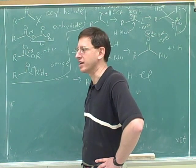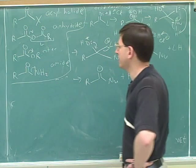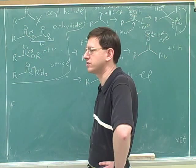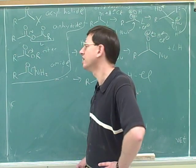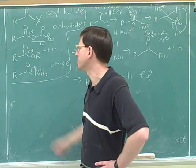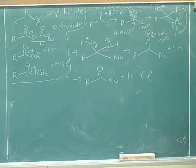A Claisen condensation is when you use an enolate as the nucleophile. Kind of like an aldol? That's right, just like an aldol. So just like an aldol condensation is just a regular nucleophilic attack on an aldehyde or ketone, it just uses a special nucleophile, an enolate. Well, the Claisen condensation is an example of this where we use the enolate to attack an ester group, basically.